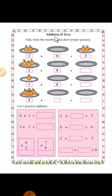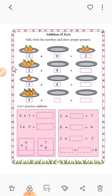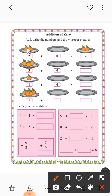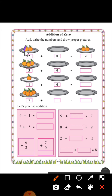Addition of zero. Add and write the numbers, and draw proper pictures. In this plate, two oranges are there — one, two is written. In this plate nothing is there — nothing means zero. So two plus zero is equals to two. Next: one, two, three — three oranges are there. In this plate nothing is there, that means zero. Three plus zero is equals to three.